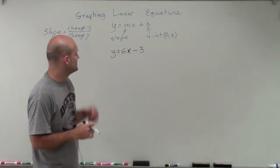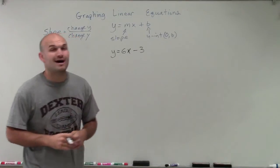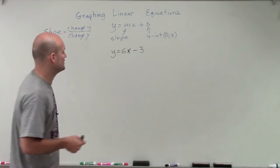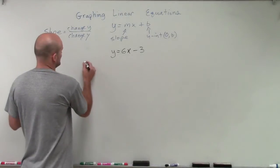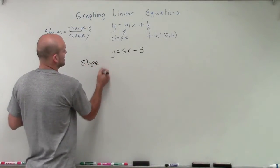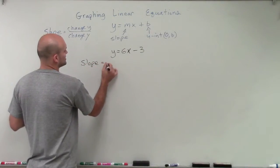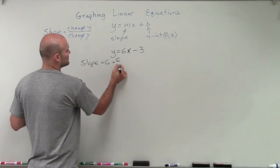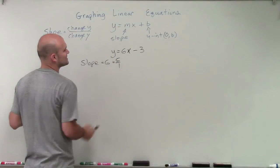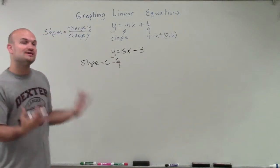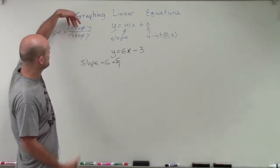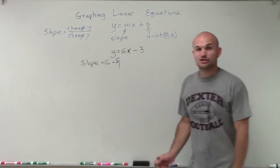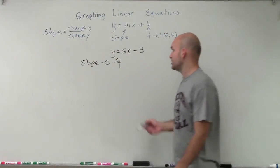Welcome. What we have here is a linear equation of y equals 6x minus 3. Let's go ahead and quickly graph this. To do that, we want to first make sure we label our slope, which in this case is 6. We can rewrite that as a fraction of 6 over 1. The reason I want to rewrite it as a fraction is because we understand the definition of slope as the change in y over the change in x.